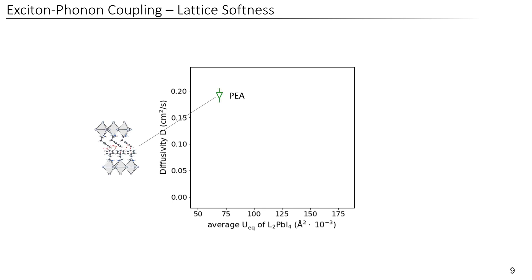We have phenethylammonium with a low atomic displacement and a high diffusivity, butylammonium with a high atomic displacement and supposedly strong exciton-phonon interactions and a low diffusivity. So this follows the expected trend that with higher exciton-phonon interaction we have more scattering and therefore a lower diffusivity.